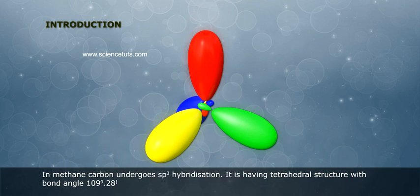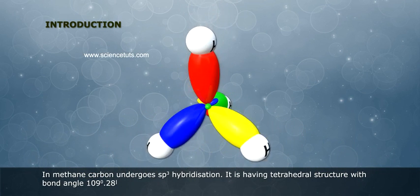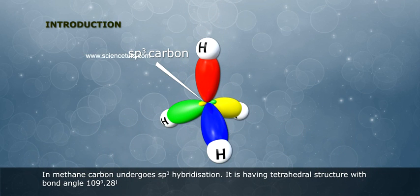In methane, carbon undergoes SP3 hybridization. It is having tetrahedral structure with bond angle 109 degree 28 minutes.